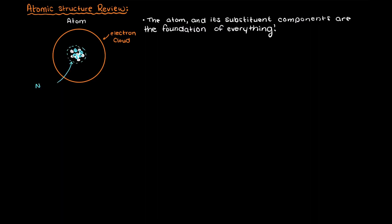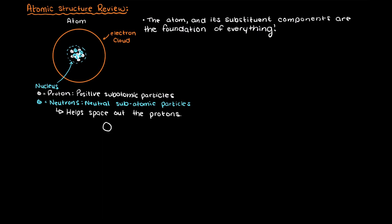Atoms have a core called the nucleus, which is made up of protons, positively charged subatomic particles, and neutrons, neutral subatomic particles. The neutrons' purpose is to act as spacing for the protons, as they are all positively charged and don't want to touch each other.